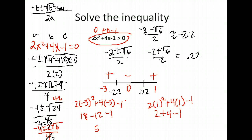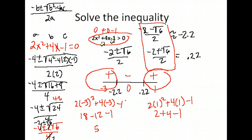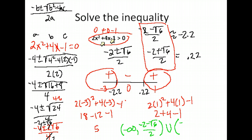So the sign pattern is positive, negative, positive. Going back to see which intervals we want: this inequality wants x to be greater than zero (positive), so we keep the first and third intervals. Writing the answer with exact values: from negative infinity to (negative 2 − √6)/2, union with (negative 2 + √6)/2 to infinity.